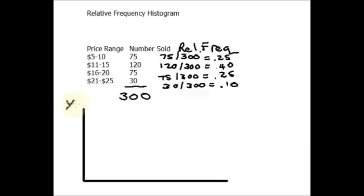I am going to make my Y axis first. On the Y axis we are going to put our percentages, that is our relative frequency. The lowest is 10 and the highest is 40.